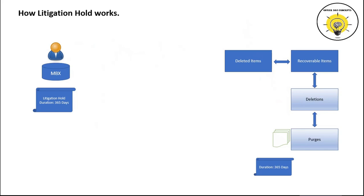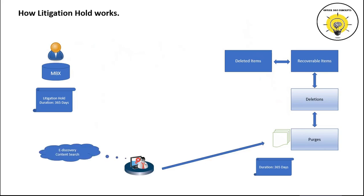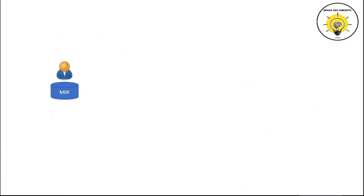The end user will not be able to recover the email, however an administrator can still recover it within the next one year using the eDiscovery tool or Content Search tool. For the end user, the email has been purged and is unrecoverable. The other benefit of litigation hold is that you can preserve the entire mailbox.